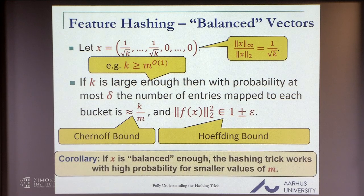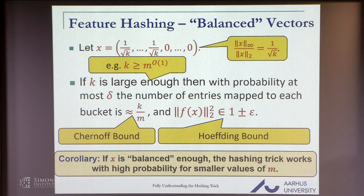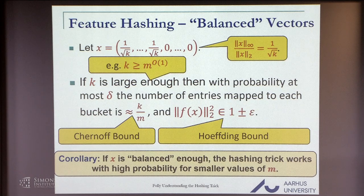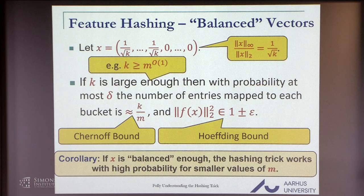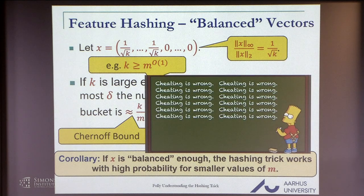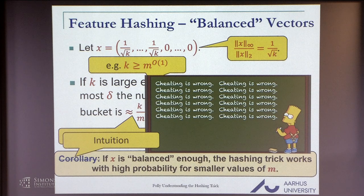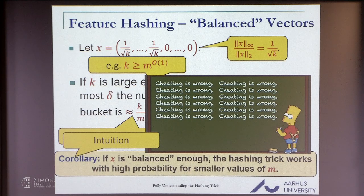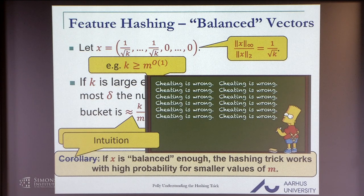If k is large enough, if the balance is very small, so every point has very little mass, then everything sort of becomes independent, and by Chernoff and Hoeffding, we can get what we want if x is very balanced. If we increase m, we can get our guarantees. If x behaves very nicely, we also get our guarantees. The problem is this is not really true. The Chernoff and Hoeffding bounds do not work. But as intuition, it serves something.